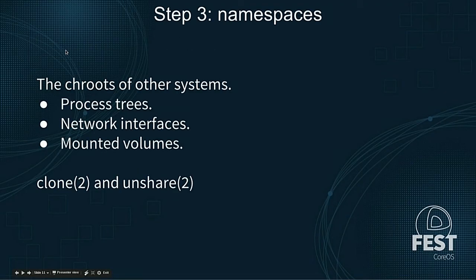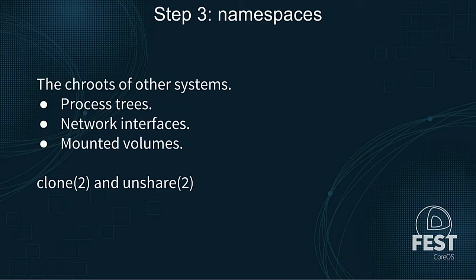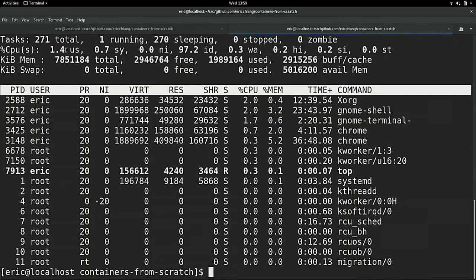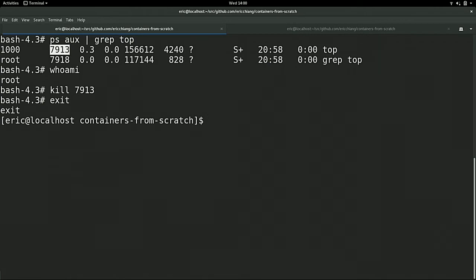This is where we talk about namespaces. Namespaces are like chroot but for other types of systems - creating unique views. You can do this for process trees, network interfaces, mounted volumes. The system calls to create these are clone and unshare. Unshare is a system call where you pass flag bits for the namespaces you want to create - a new process namespace, a new network namespace. You call unshare, and the next time you fork, that child will be in these new namespaces.